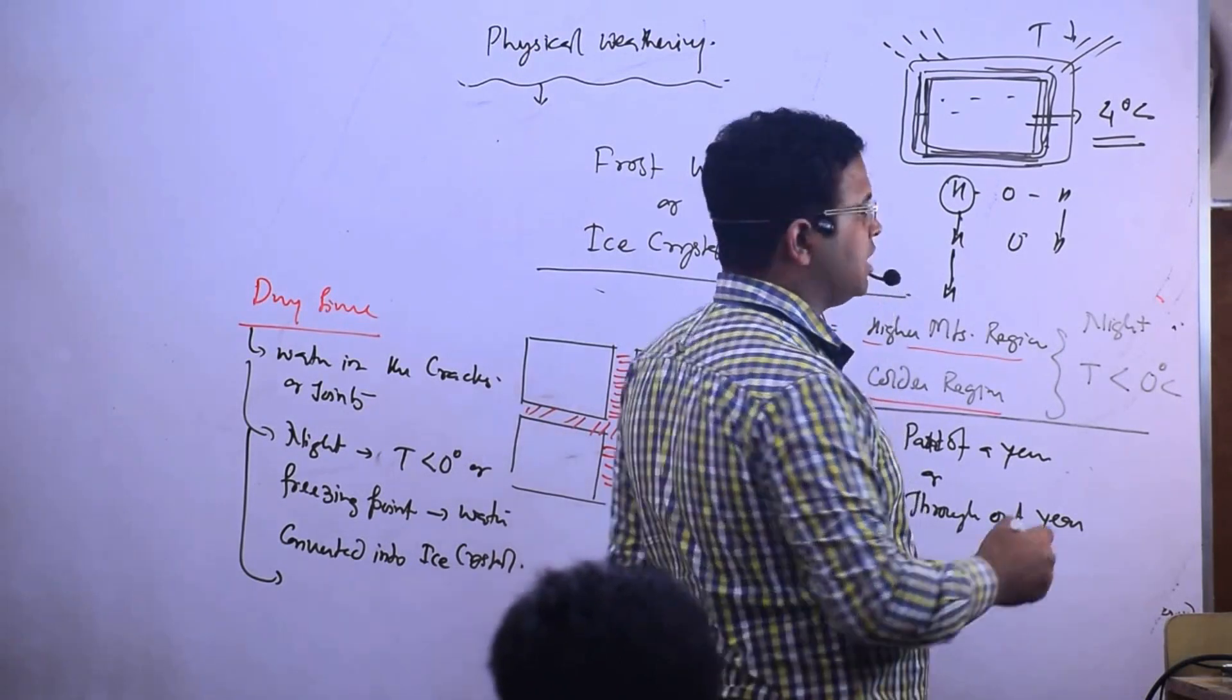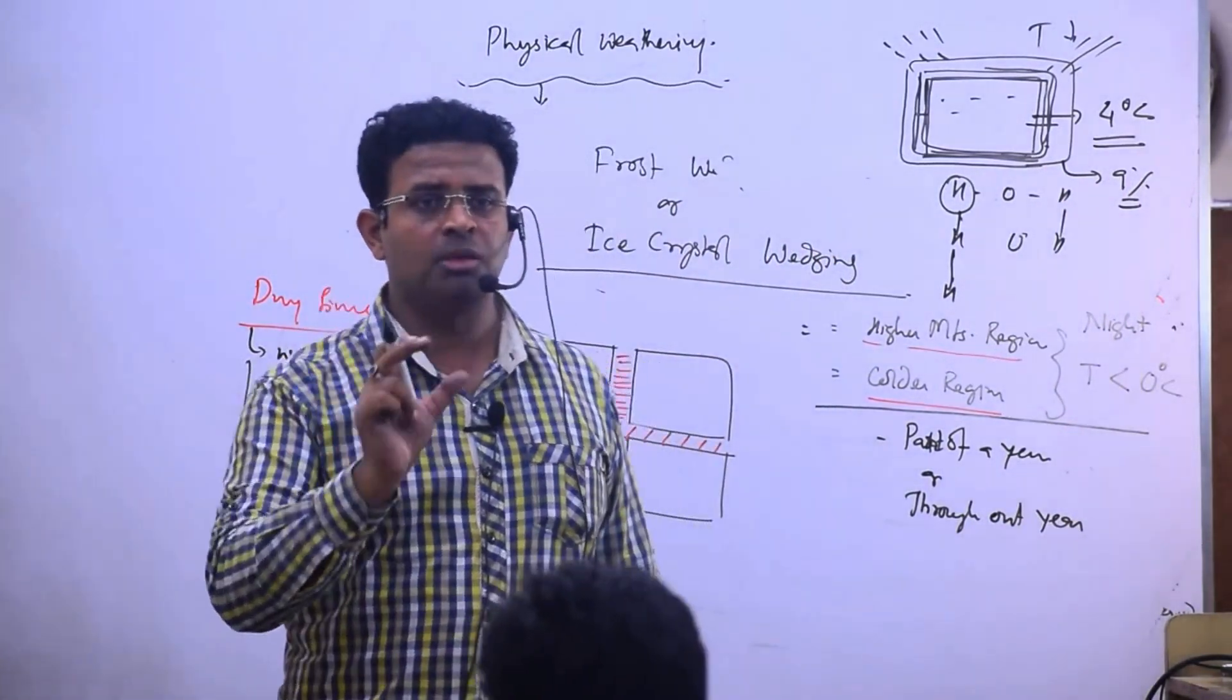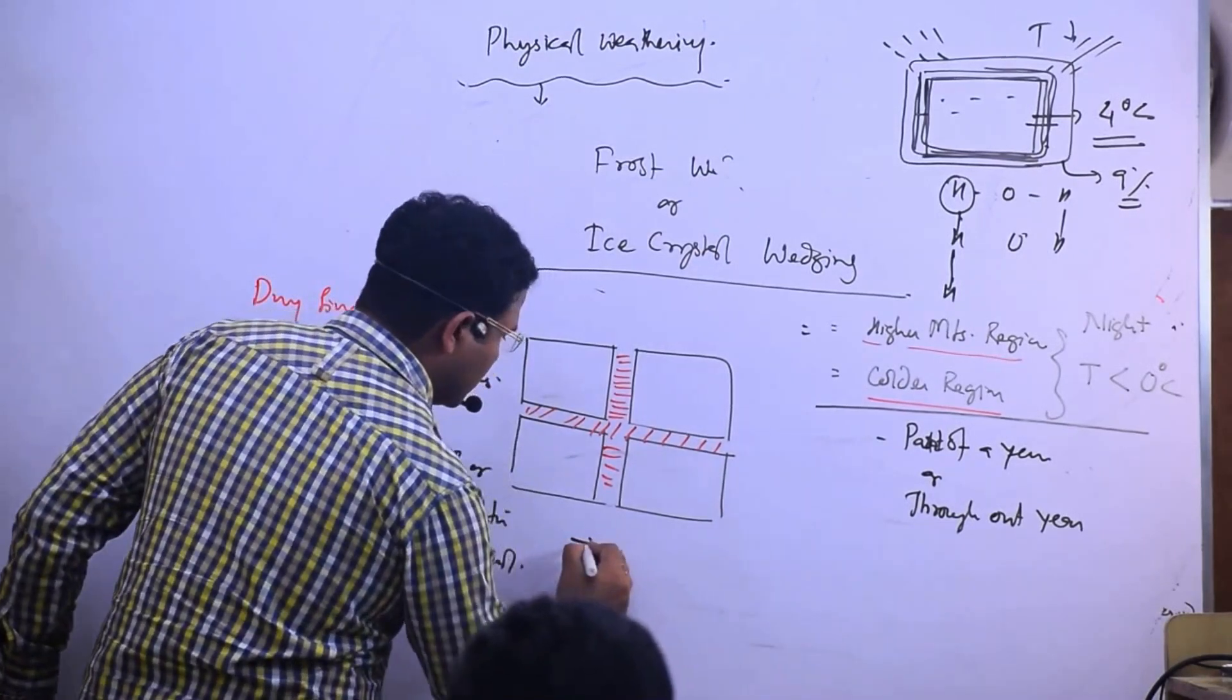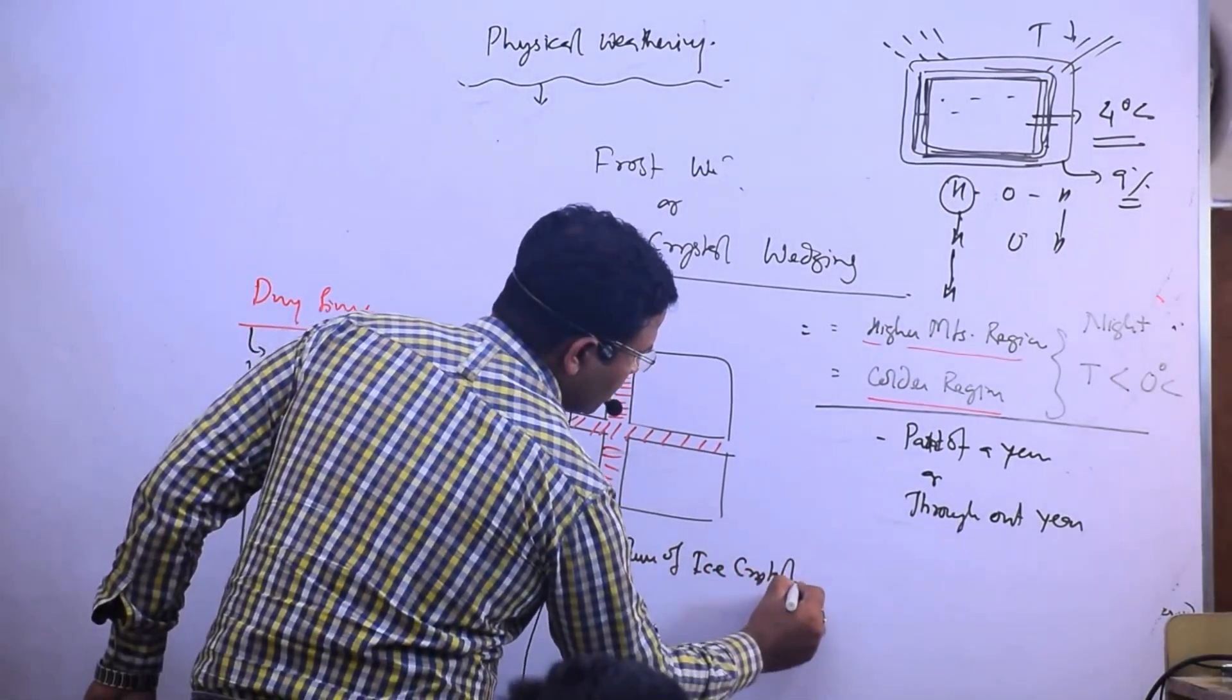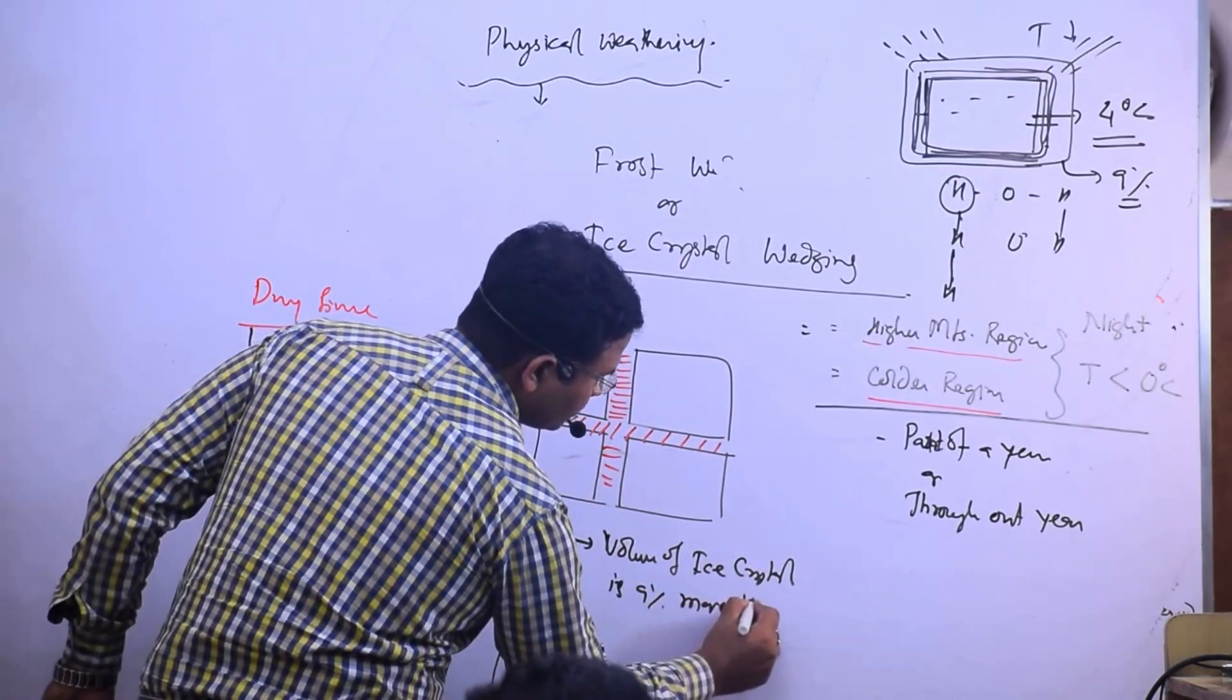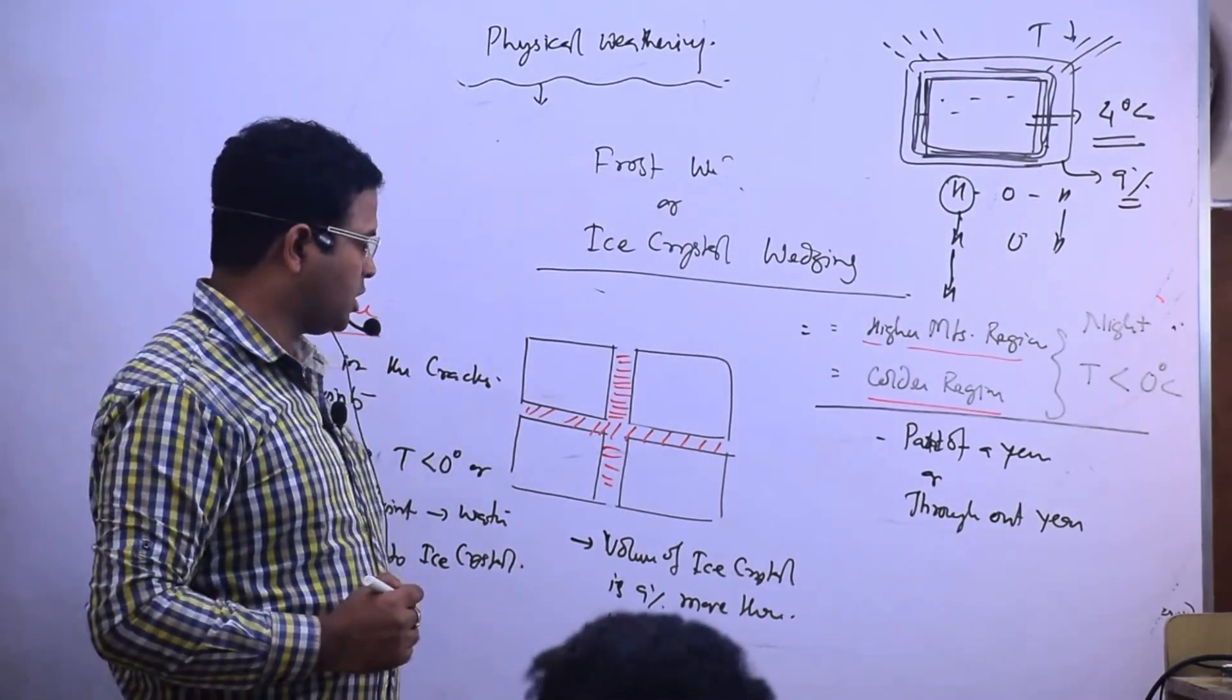This volume increases by 9%, more than 9% more than the volume of water. So what I say: volume of ice crystal is 9% more than water.